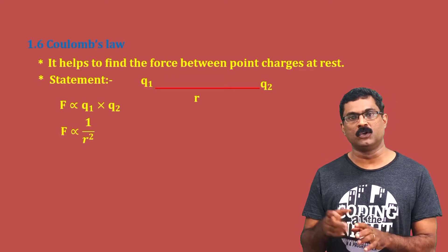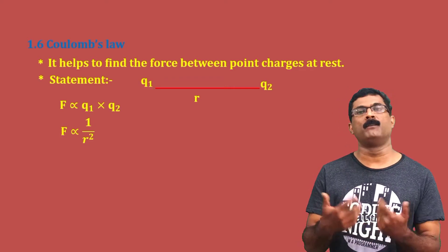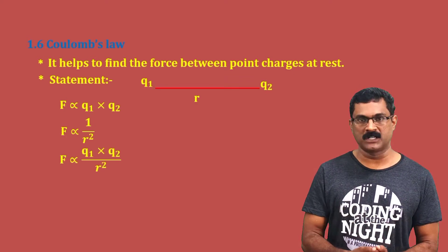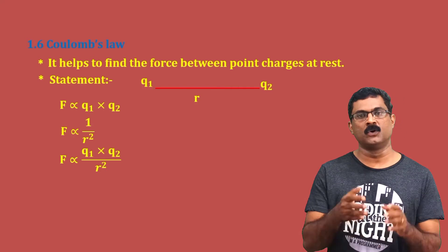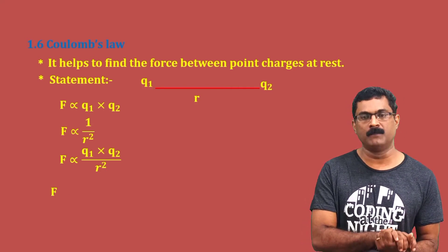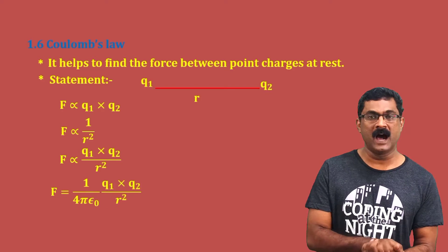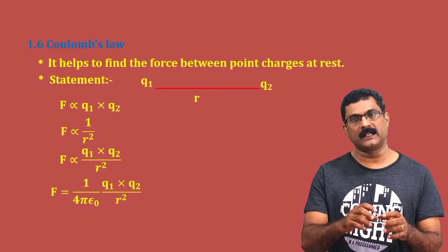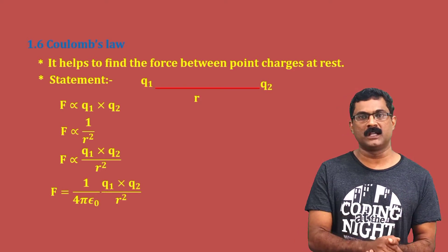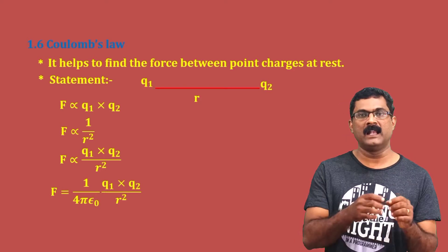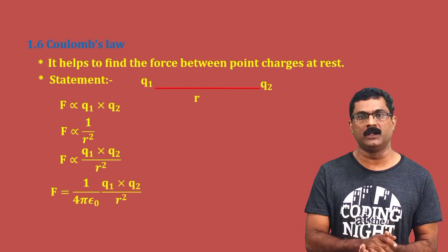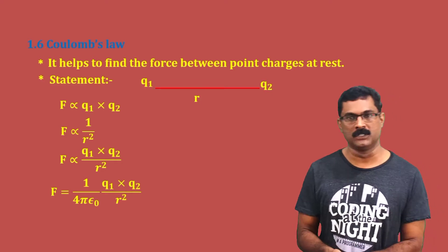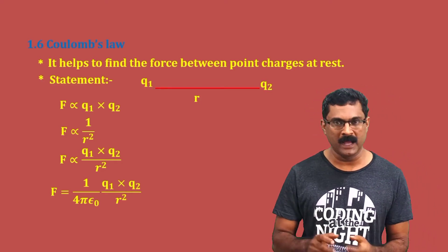Combining both, we get F proportional to q1 q2 divided by r square. We replace the proportionality with a constant — 1 by 4π epsilon₀. So the equation becomes F is equal to 1 by 4π epsilon₀ times Q1 Q2 divided by R square. This is the mathematical equation. Write down the equation for Coulomb's Law: F equals 1 by 4π epsilon₀ Q1 Q2 divided by R square.